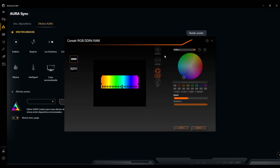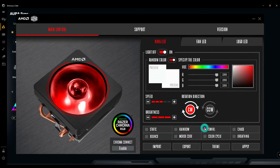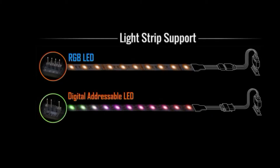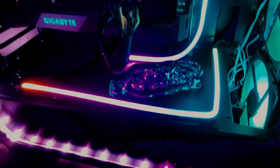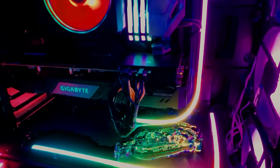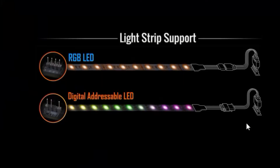First things first — differences. RGB is the first generation we saw a few years ago for gaming computers. Its main characteristic is 4-pin connectors at 12 volts, and they give one color at a time. If you configure your PC with RGB devices, you can configure everything with a single color or randomly with different shades. ARGB or DRGB devices have 3 pins at 5 volts and can be configured to give customized effects to each individual LED.